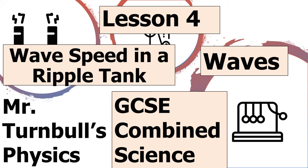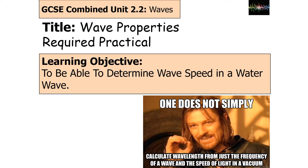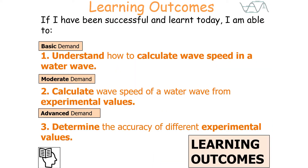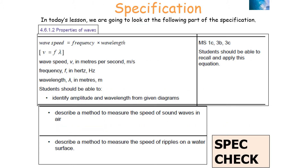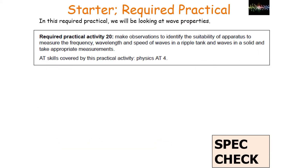Hello and welcome to today's lesson where we're going to look at how we can measure the wave speed in a ripple tank, which forms part of the GCSE Combined Science topic in Physics of Waves. In today's lesson we're going to look at how to determine the wave speed in a water wave, covering AQA Combined Science Required Practical Activity 20: making observations to identify the suitability of apparatus to measure the frequency, wavelength and speed of waves in a ripple tank.